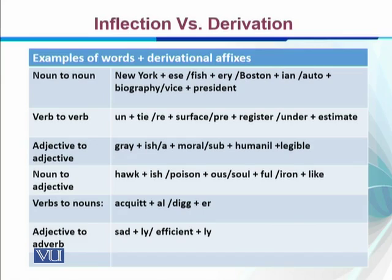Noun-to-noun: 'New York' / 'New Yorker', 'fish' / 'fisheries', 'Boston' / 'Bostonian', 'auto' / 'autobiography'. Verb-to-verb: 'untie' / 'retie', 'surface' / 'resurface', 'pre-register', 'underestimate'. Adjective-to-adjective: 'gray' / 'grayish', 'immoral', 'subhuman'. Noun-to-adjective: 'hawk' / 'hawkish', 'poison' / 'poisonous', 'soul' / 'soulful', 'iron' / 'ironlike'. Adjective-to-adverb: 'sad' / 'sadly', 'efficient' / 'efficiently'. With derivational morphemes, the class sometimes changes and sometimes remains the same.